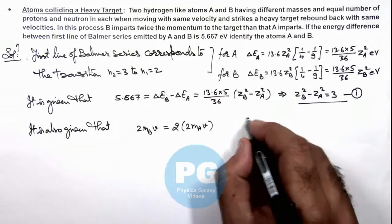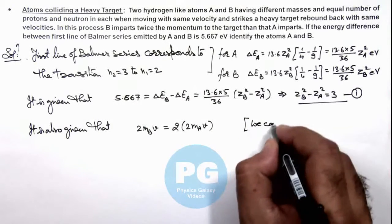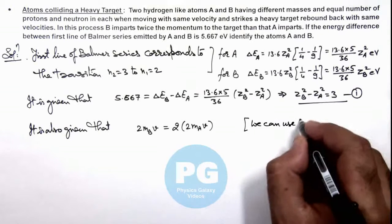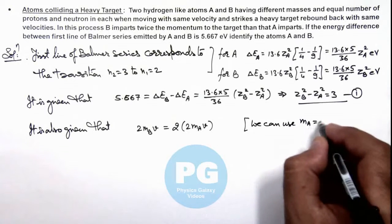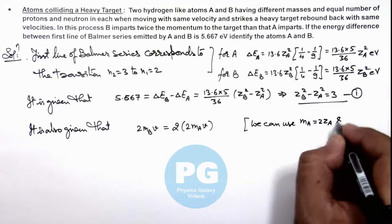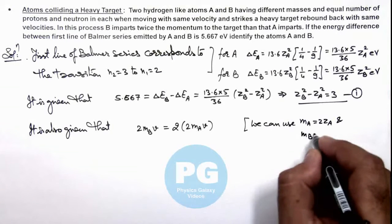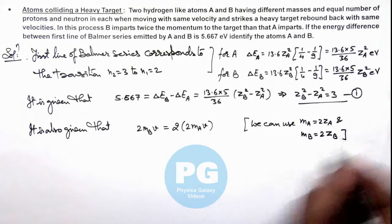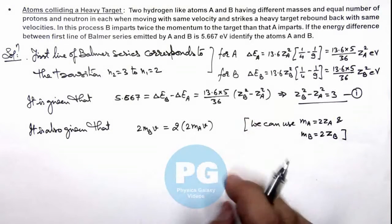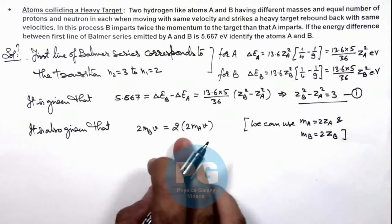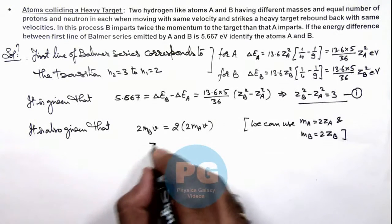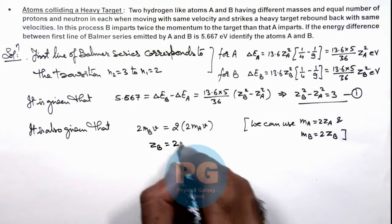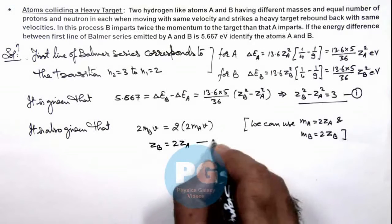We can write mₐ is equal to twice of Zₐ, and mᵦ is equal to twice of Zᵦ, as number of protons and neutrons are equal. If we substitute the values here we are getting Zᵦ is equal to twice of Zₐ. This is equation 2.